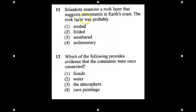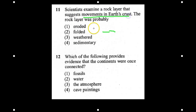Now for the multiple choice section. Number 11: scientists examined rock layers that suggest movements in Earth's crust. These rock layers were probably eroded — meaning carried away — folded, meaning one on top of the other, weathered, meaning reduced to smaller pieces, or sedimentary. The answer is folded, because plate boundaries can fold on top of one another.